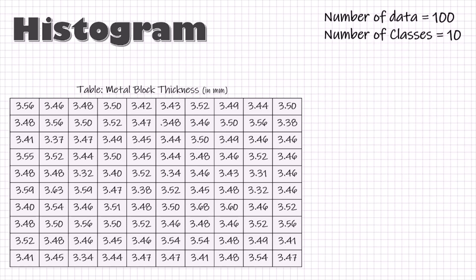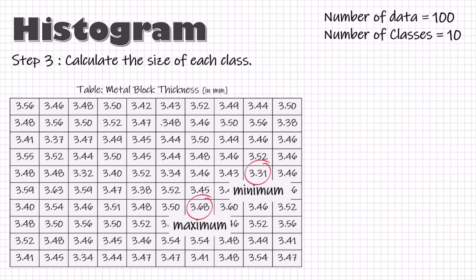Now, calculate the size of each class. In order to do this, first identify the minimum and maximum values in our data set and then calculate the range of our data and then divide this range by the number of classes. This will give the size of our class. Now, since our unit of measurement is 0.01, let us round off our class size to 0.04.